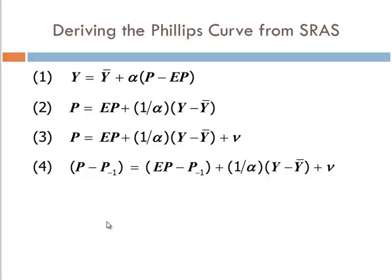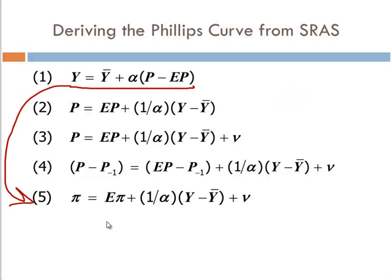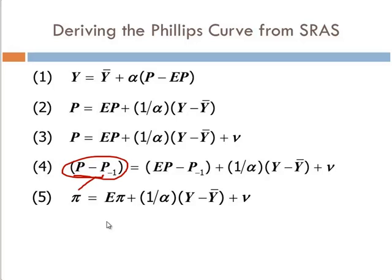Next, we're going to subtract from both sides the price level from the previous period. Now one thing that I haven't told you is in this derivation, we really want to interpret this P, this price level, as actually the natural log of price. And I'm going to show you why. Because when we go to 5, we're going to rewrite this as the inflation rate. So we're just going to write that as the inflation rate and this as the expected inflation rate. That is not precisely true if we put the level of the price in there, but if we interpret this as the log of price, then this becomes a very good approximation of the inflation rate and the expected inflation rate.